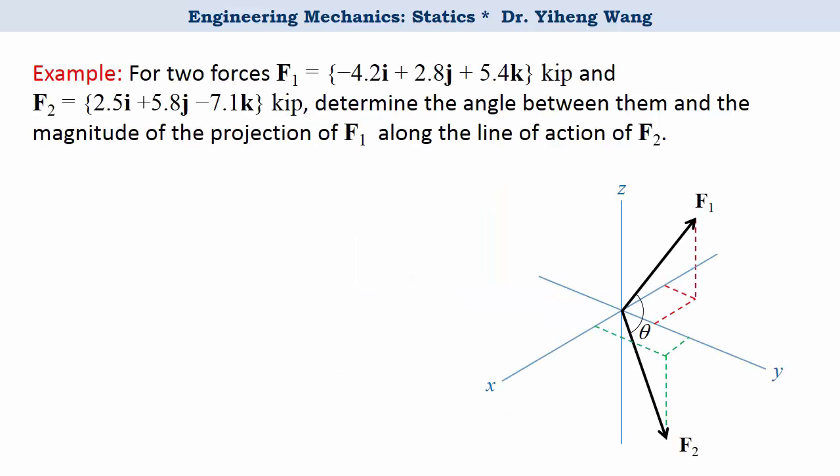Let's look at this example. Two forces are drawn in the x, y, z coordinate system, and they are also expressed in their respective Cartesian vector forms, given in the unit of kip, kilopound.